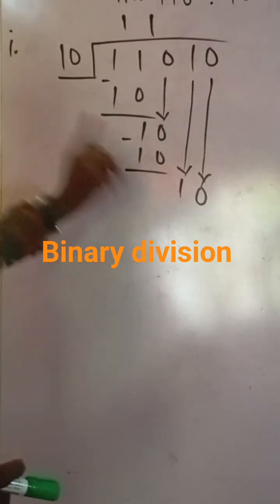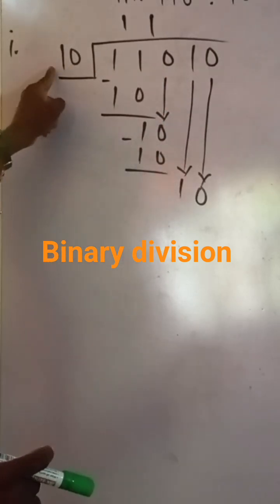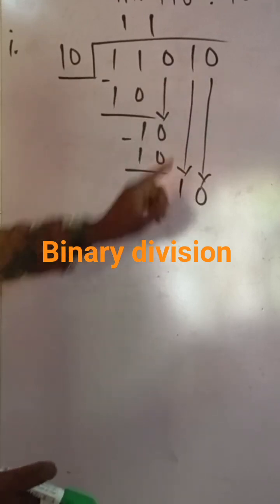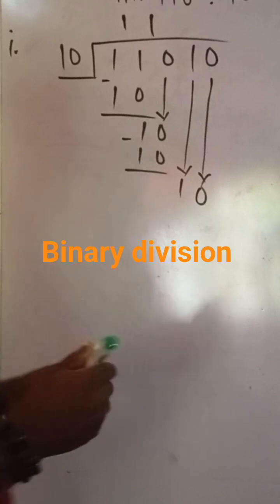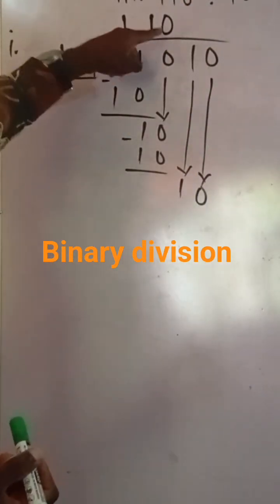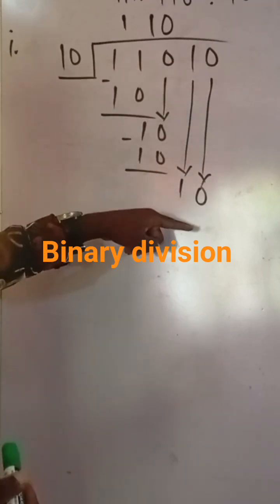The normal step is I'm supposed to bring down just one value and do my division. Since the one I brought down the divisor could not go into, I have brought down another one. Since I brought down one more, I'm going to have to write one zero at the quotient, because I brought down one more value before I did my division.